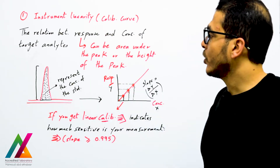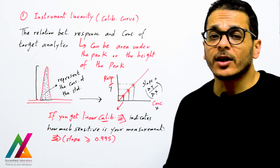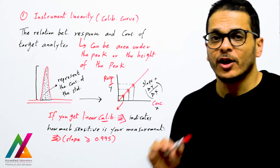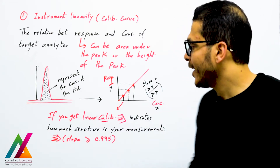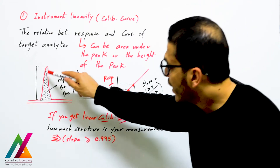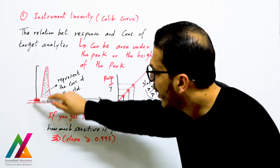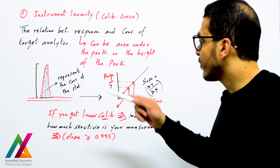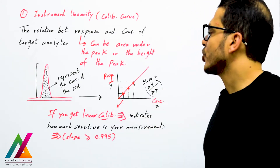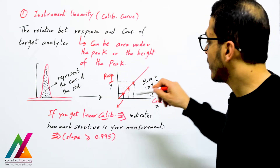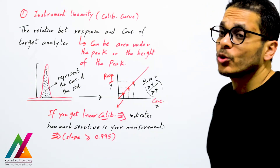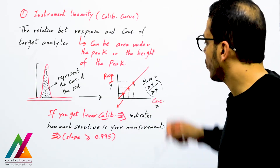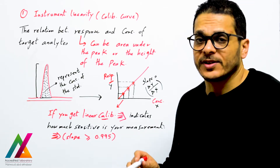Instrument linearity, or the calibration curve, is the relation between response and the concentration of target analytes. The response in chromatography can be the area under the peak or the height of the peak. When you run any calibration standard for your target analyte, you get a peak, and each calibration standard gives one point on this line — the relation between response on Y and concentration on X.